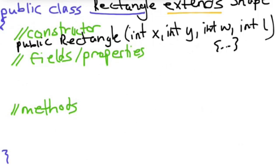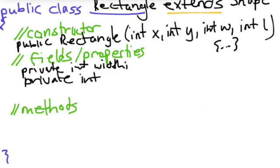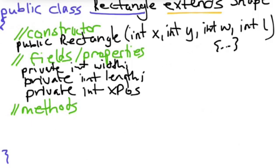Now rectangle is going to have all of the fields and properties of shape, the line color and fill color and line width already, but we're going to add to it. So a rectangle we need to keep track of int width, private int length, and private int x position and y position. Okay. So those are the fields and properties in rectangle that we're adding to the ones we already have because we've subclassed shape.